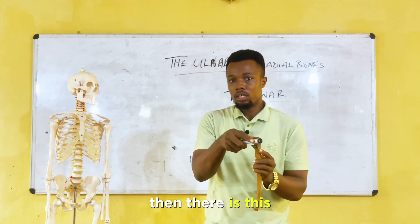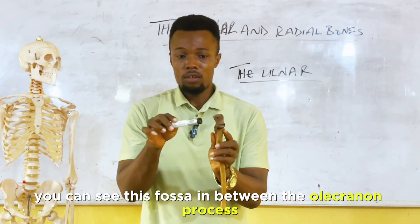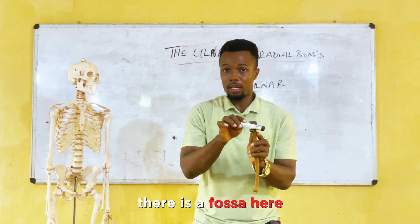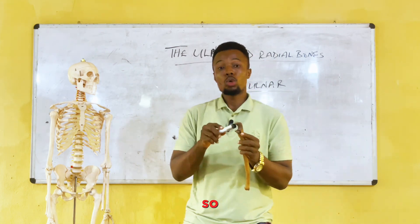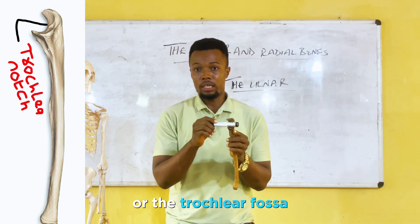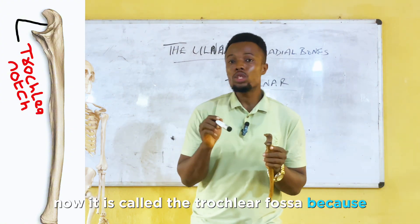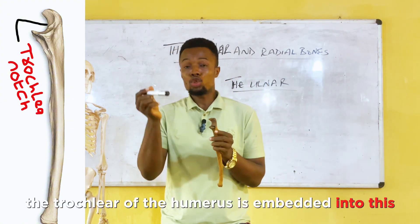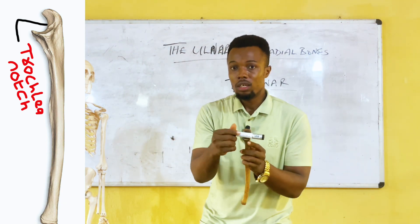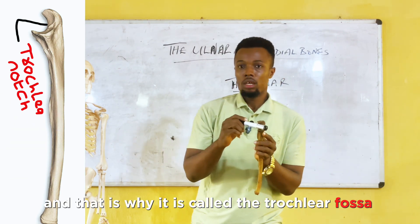In between the olecranon process and the coronoid tubercle, there is a fossa referred to as the trochlear notch or the trochlear fossa. It is called the trochlear fossa because the trochlea of the humerus is embedded into it — this is where the trochlea of the humerus lies.